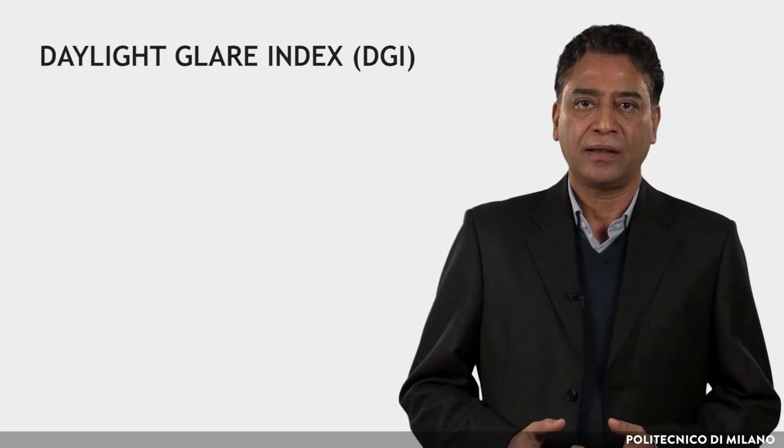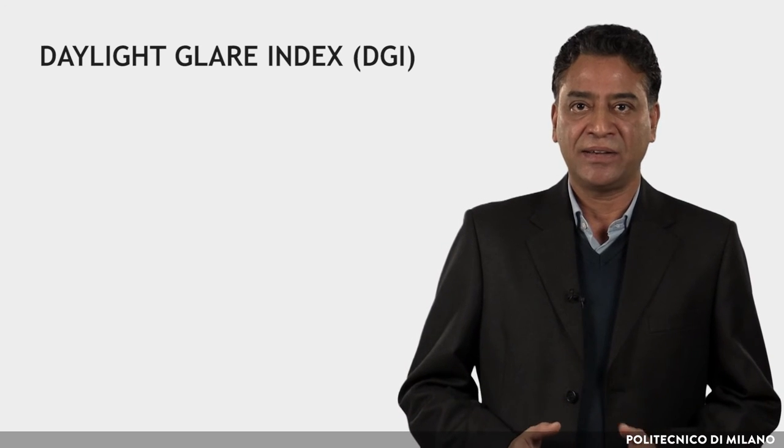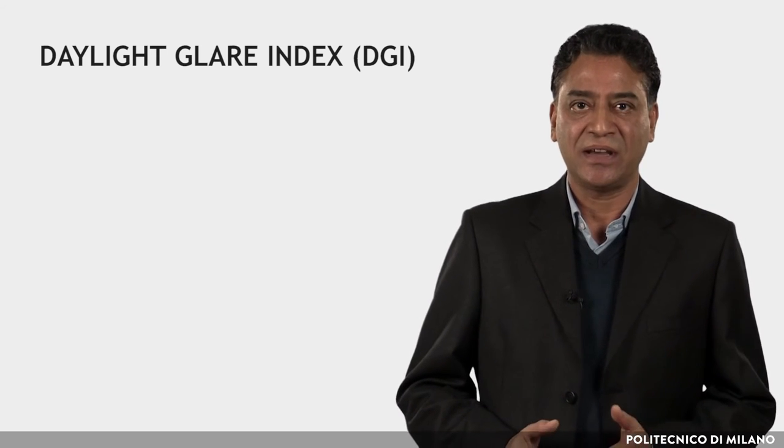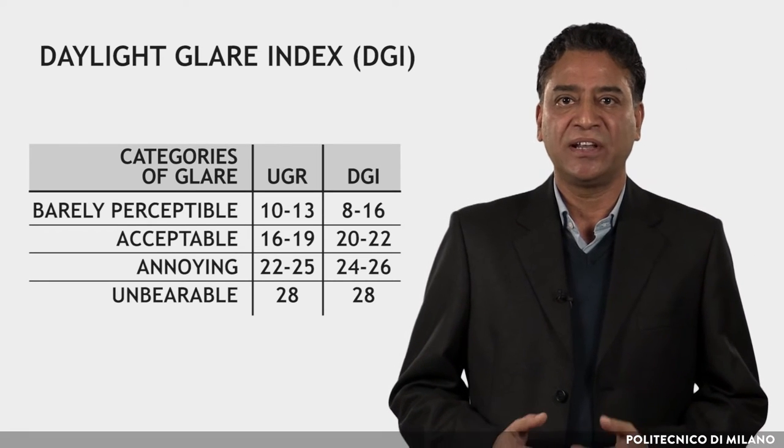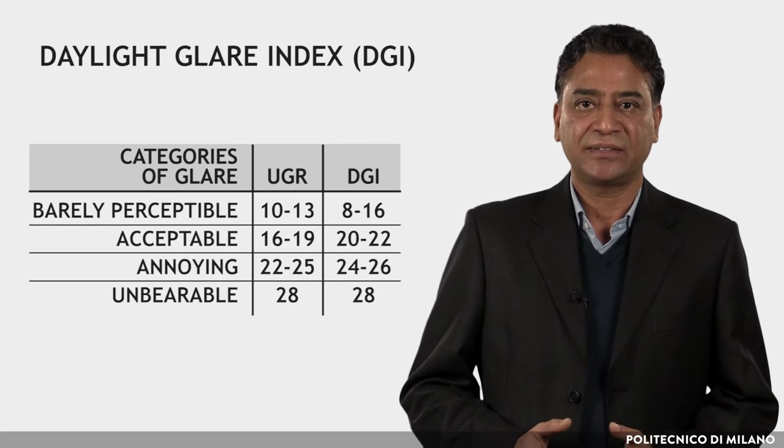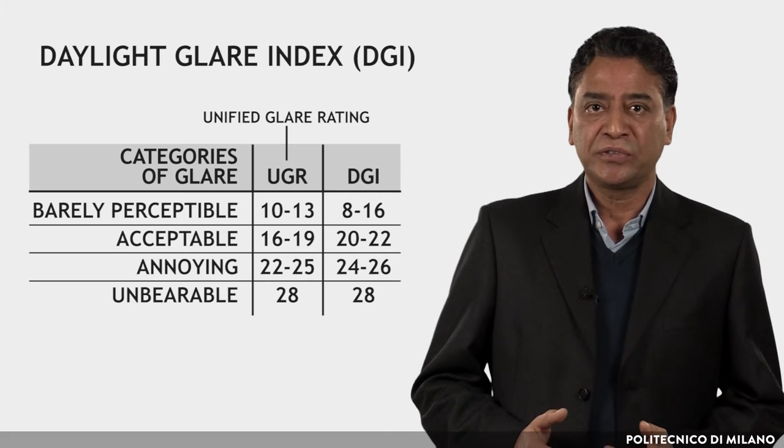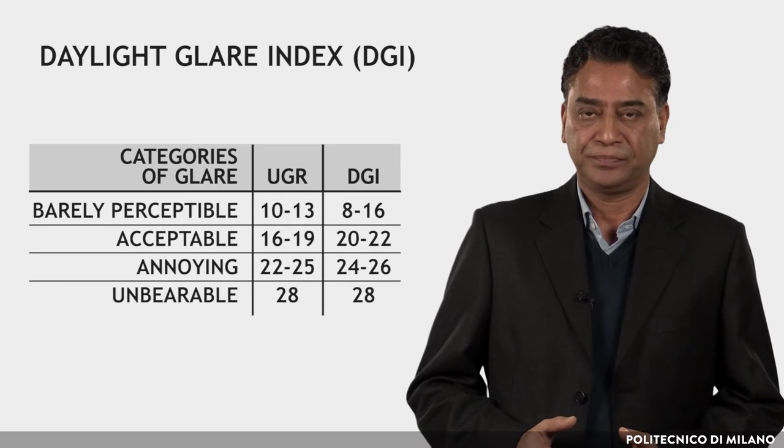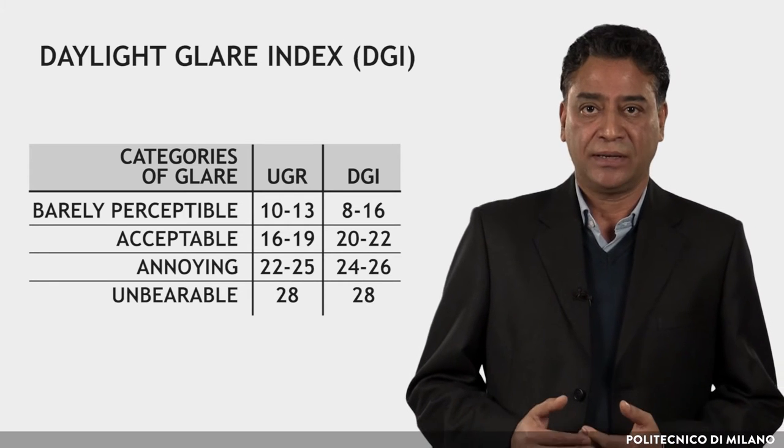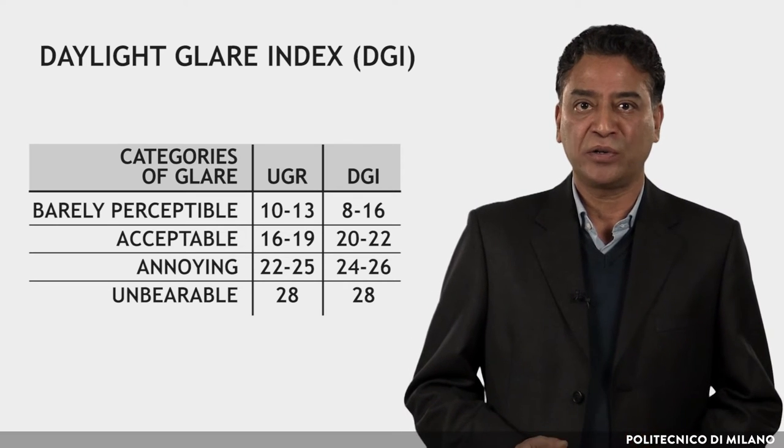To assess the level of glare, an index was developed, the Daylight Glare Index. The DGI allows predicting the glare due to natural light. The index UGR, which is Unified Glare Rating, is used also for evaluating glare due to an artificial light source. Based on the resulting values of DGI, the level of glare can be evaluated according to the classification shown in the table.